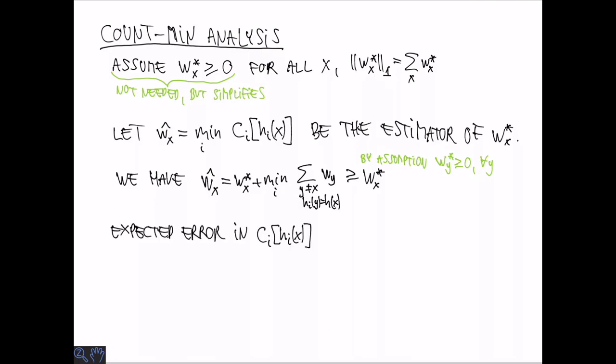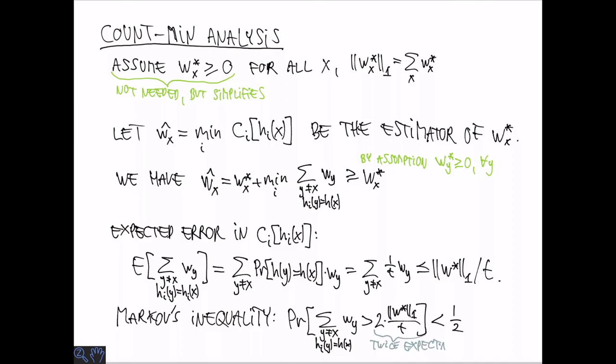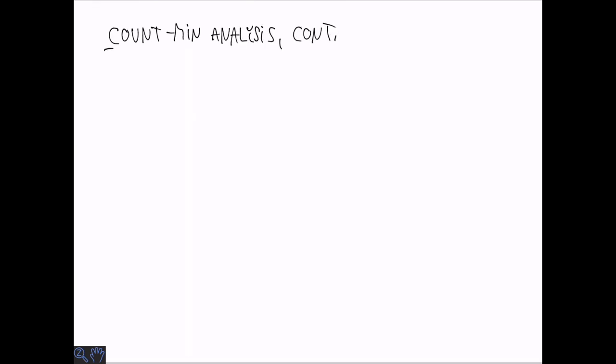Let's bound the expected error in table number i. So the expected value of the expected sum of all y that collide with X is going to be a weighted sum where we weigh each W_y star by the probability of a hash collision which is exactly 1 over t if we assume random hashing. So all in all we get something that is bounded by the L1 norm divided by t. Now Markov's inequality says that it's not too likely that we are far above the expectation. In particular the probability that we are above two times the expectation is at most one half. Note that this means that with probability at least one half we get an error that is similar to that of Misra-Gries with k equals t. That is roughly the same space usage.